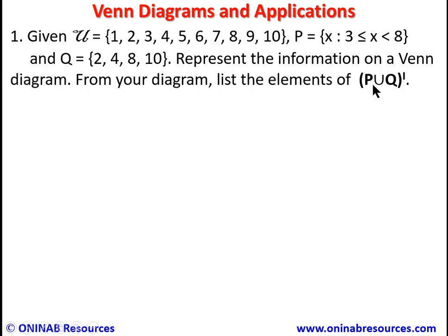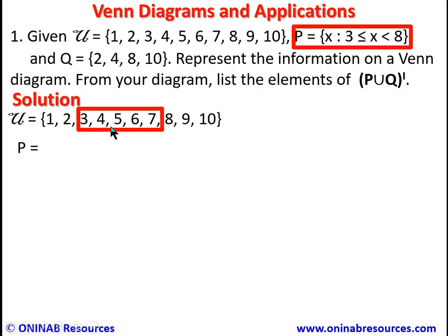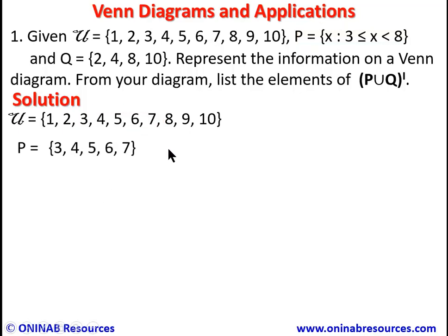From your Venn diagram, list the elements of P union Q prime. P is given in set-builder form, so we list out its elements. Since P and Q are subsets of the universal set, we get the elements of P from the universal set. The interval is 3 inclusive to 7, giving P = {3, 4, 5, 6, 7}. Q is already given as {2, 4, 8, 10}.